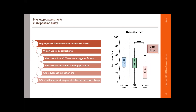In the oviposition assay, the anti-NORMA3 cohort laid 43% fewer eggs than the controls. Interestingly, with more than 100 biological replicates, approximately 14% of females laid no eggs at all, and a quarter of the cohort laid fewer than 10 eggs.